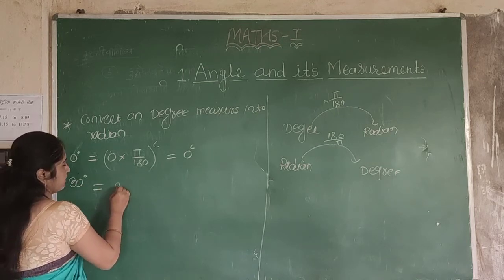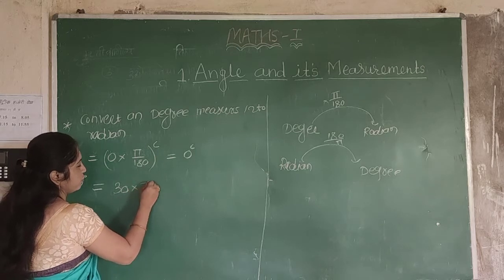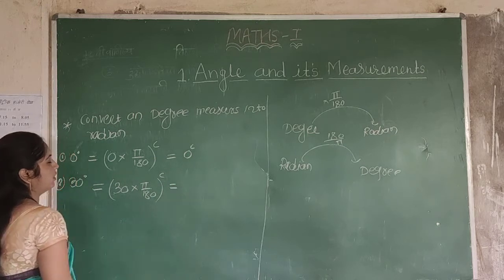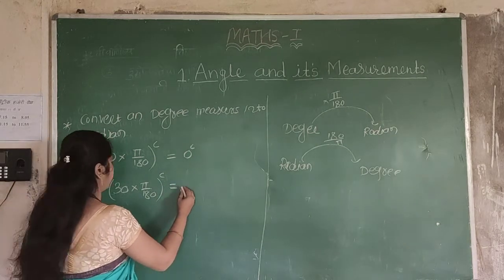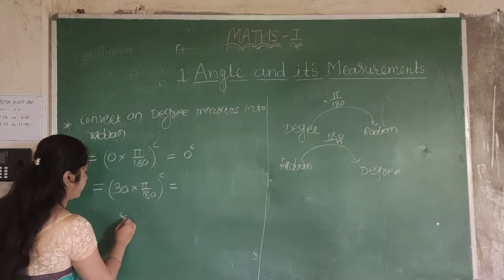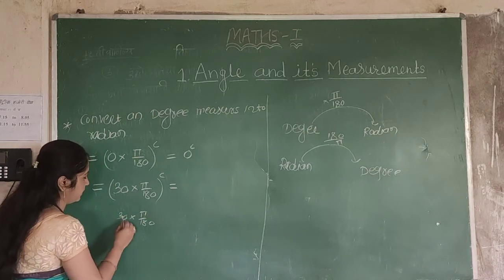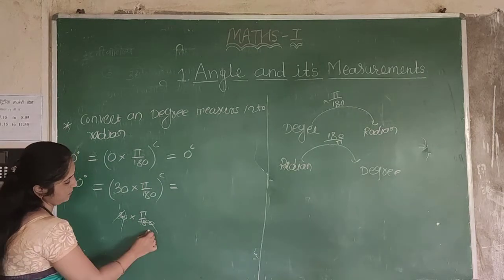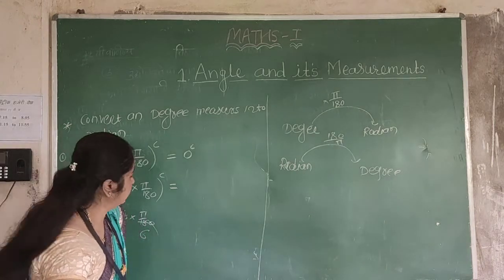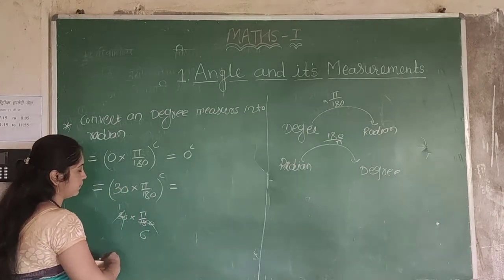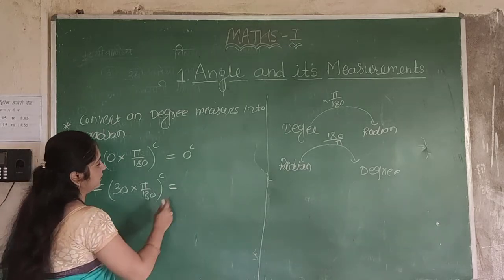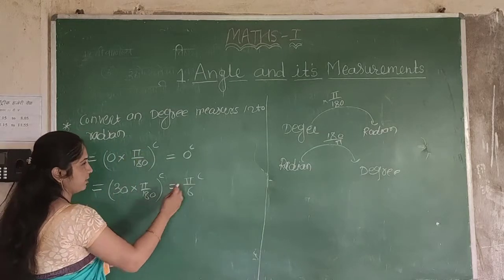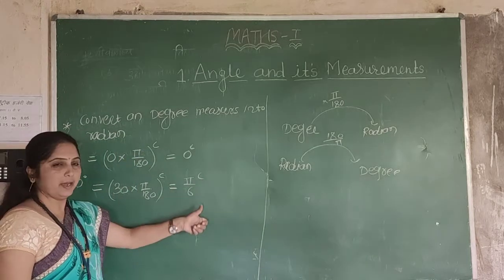Next standard angle is 30 degrees. So 30 into pi by 180. We simplify: 30 and 180 cancel — 3 goes into 18 six times — and we get pi by 6. So 30 degrees equals pi by 6 radians.